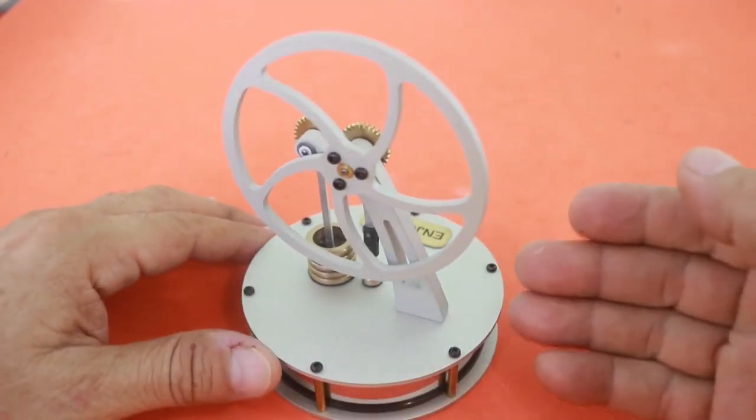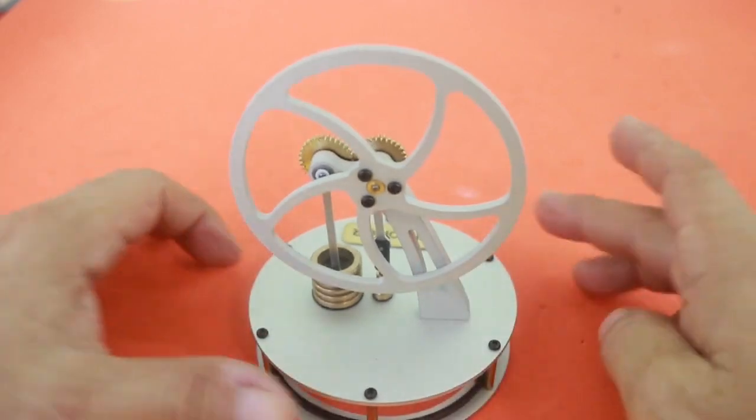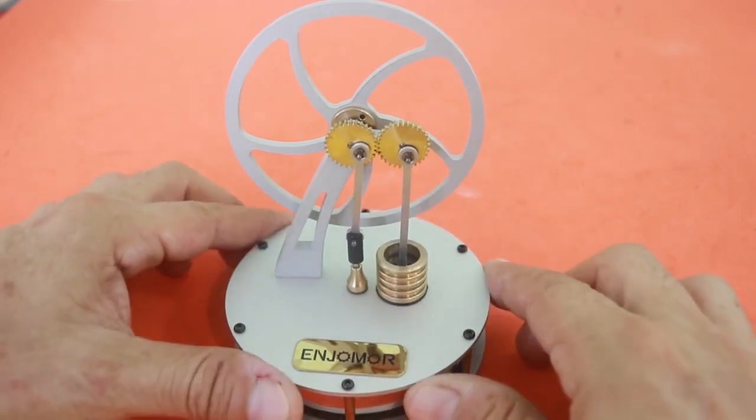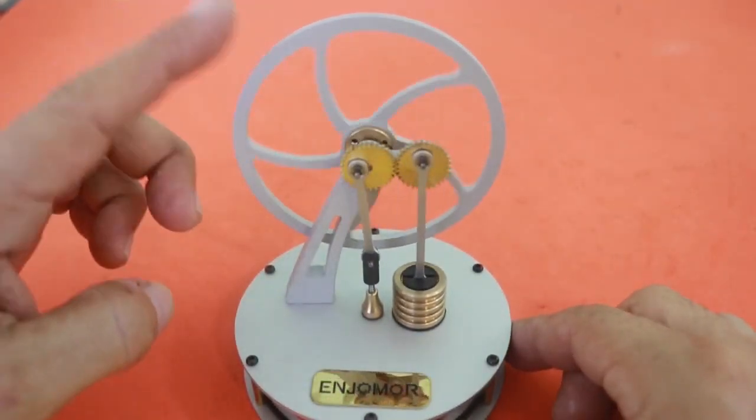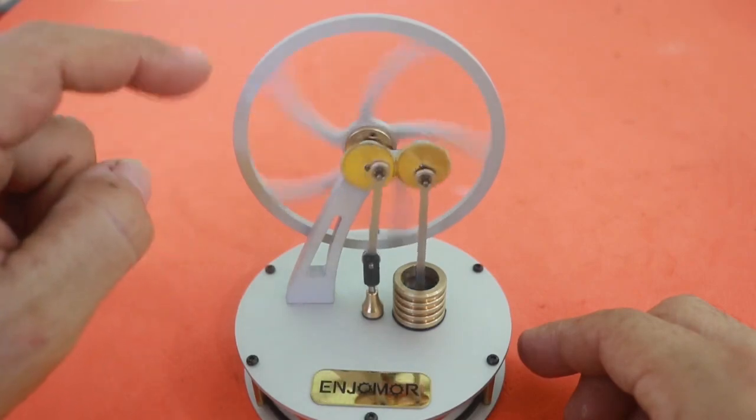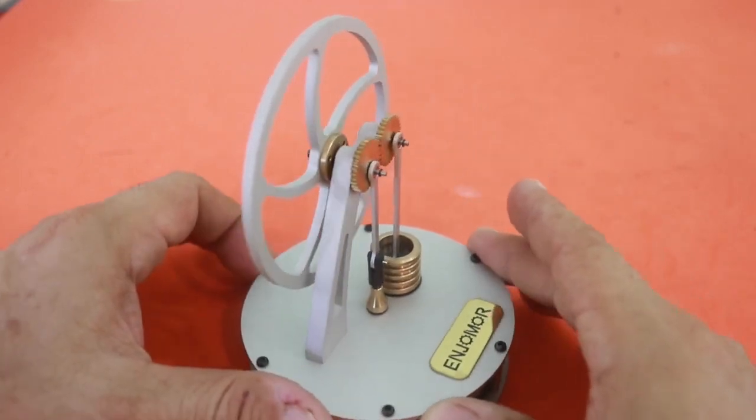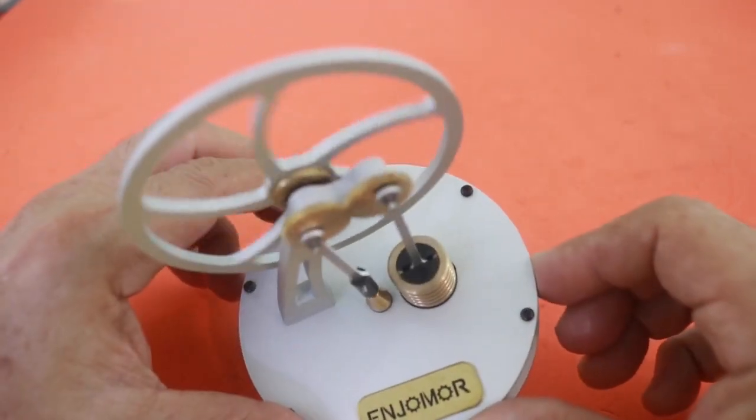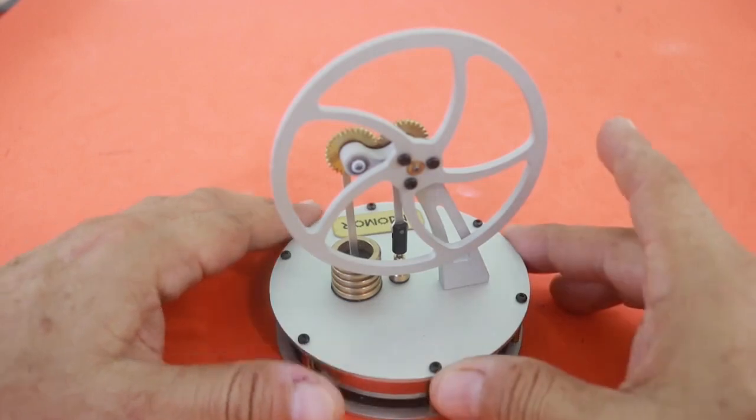And it really surprised me, the quality of this little engine. It is very well built, all metal. And what is very interesting is the linkage mechanism of the two pistons. You can see that we have two gears in there. And the engine runs very smooth. That means that all the surfaces are very polished and everything is in balance. And the engine runs very well, as you will see in a moment.